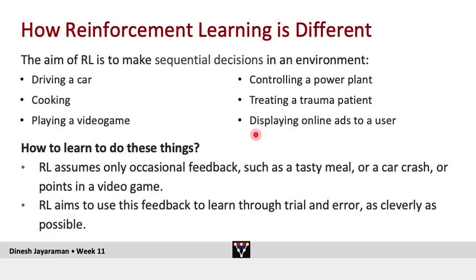The RL answer is to assume you have occasional feedback. If you're learning to cook, feedback comes from whether your meal is tasty. If you're learning to drive, feedback comes from whether you've crashed or gotten home safely, or maybe from an occasional honk from nearby drivers. If you're learning to play a video game, the points give you feedback. RL uses that feedback to learn through trial and error — you try out things and see what gives the best feedback, then make use of that experience as cleverly as possible to minimize the number of trials needed.